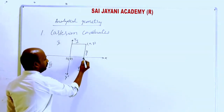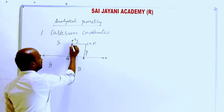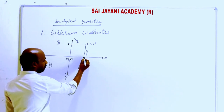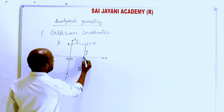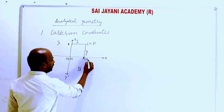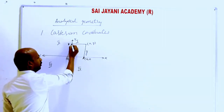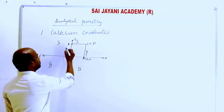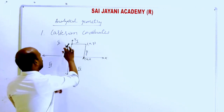Take point A as the intersection on the x-axis — its coordinates are (x, 0). Point B lies on the y-axis, so its coordinates are (0, y).